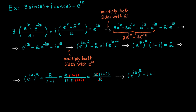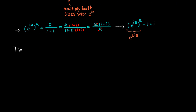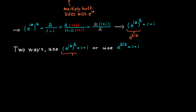So e to the ic squared equals 1 plus i. A quick side note: we can also use the exponential rules to rewrite the left side as e to the 2ic. The last bit of the equation can be solved using either of these two expressions, though one of them requires significantly more work. Let's start with the more complicated one.